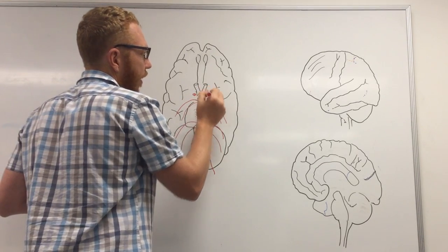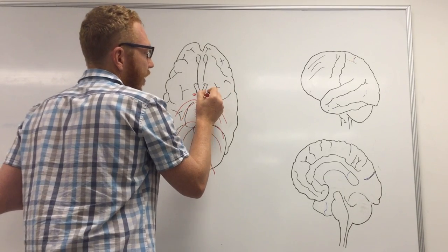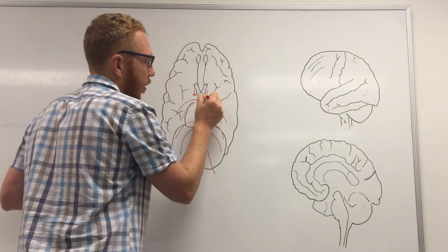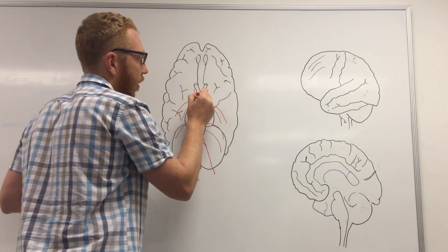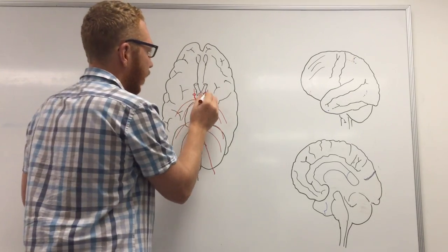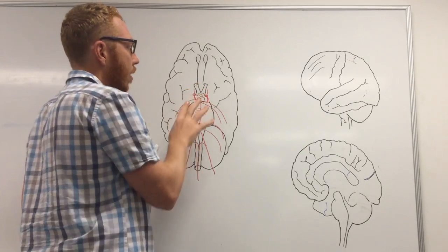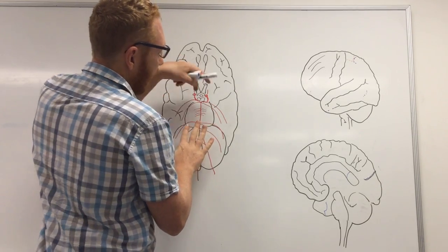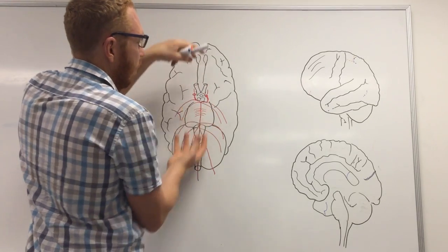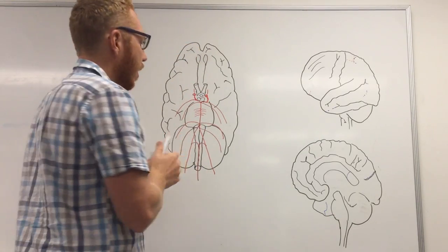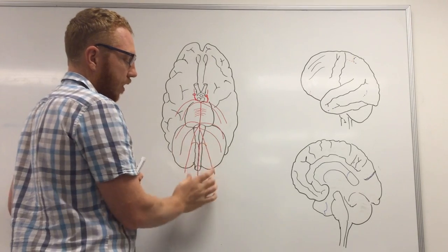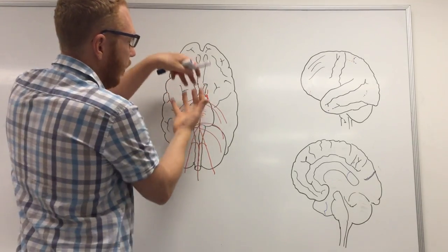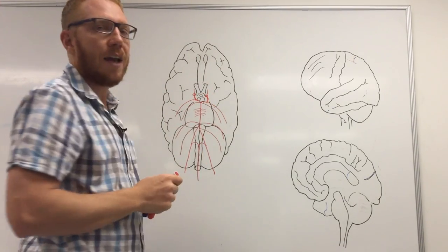When the internal carotids enter the cranial cavity they give off three major branches. First, the ophthalmic branch going to the eye. Second, the posterior communicating branch, which goes back to connect with the posterior cerebral artery. This is important because it forms part of the circle of Willis, allowing blood from the posterior supply to meet blood from the anterior supply and equalise flow. Only about 12–15% of blood comes from the vertebral arteries, while over 80% comes from the internal carotid arteries.